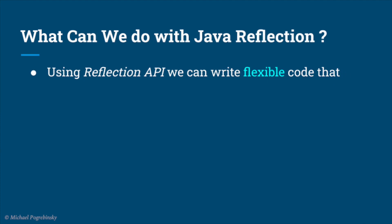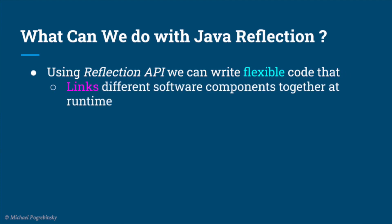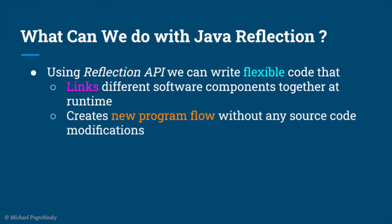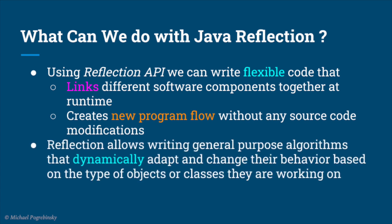Using the Java Reflection API, we can write flexible code that links different software components together at runtime and creates a new program flow without making any modifications to the source code. Reflection also allows us to write extremely powerful, general-purpose algorithms that dynamically adapt and change their behavior based on the type of objects or classes they are working on.